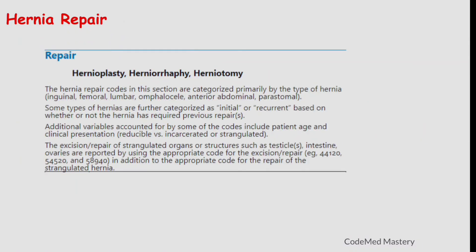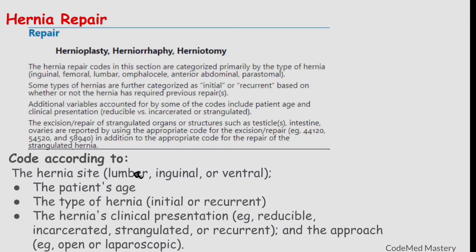The next important guideline is hernia repair. Hernia repair codes are categorized primarily by type of hernia: inguinal, femoral, lumbar, omphalocele, anterior abdominal, and parastomal. To code hernia repair correctly, identify the hernia site, the patient's age, whether it is initial or recurrent, the clinical presentation (reducible, incarcerated, or strangulated), and the approach (open or laparoscopic).